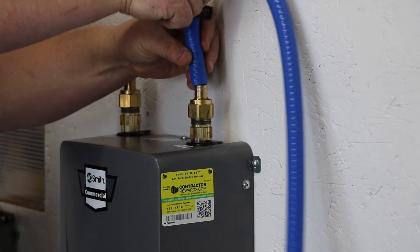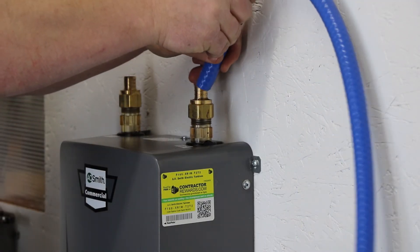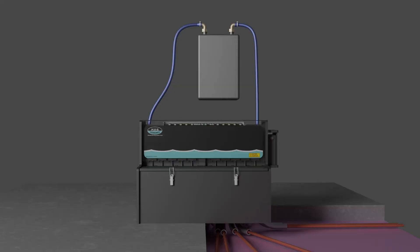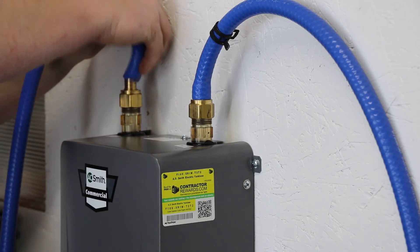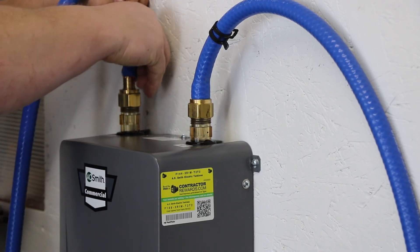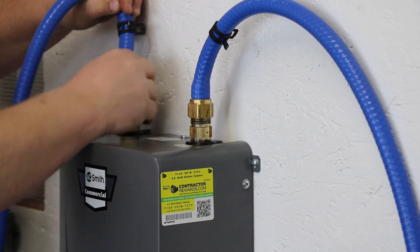The blue hose on the right side connects cold water into the water heater. The one on the left side connects warm water from the heater to the tank.